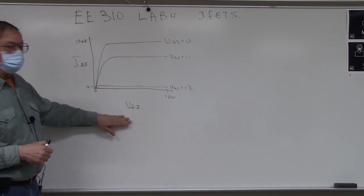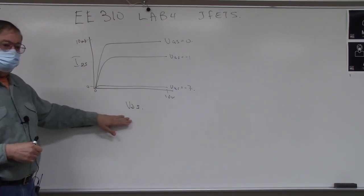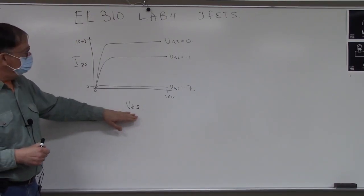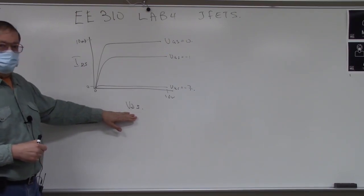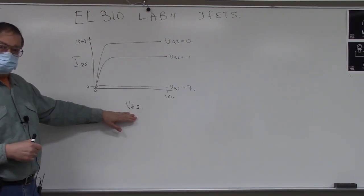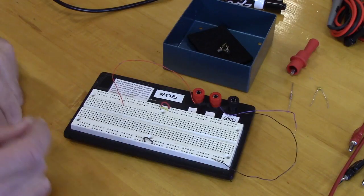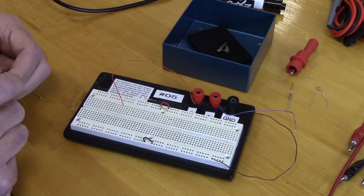So this is the kind of curve we're going to be taking in part one. It's kind of tedious, but it'll move pretty quickly once we get into the rhythm of it. Okay, so welcome to part one of the experiment — we're going to be doing the DC characteristic.